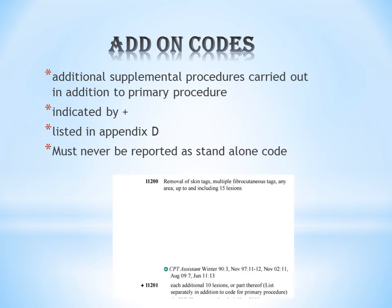Some important terms: modifiers have been covered in previous videos. The next topic is add-on codes. Add-on codes are additional codes that always come along with a primary code — they should never be reported as the first or standalone code. Add-on codes are indicated with a plus (+) mark. For example, +11201 is an add-on code.